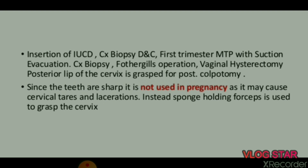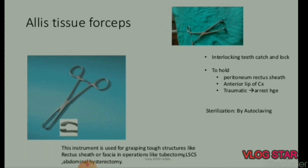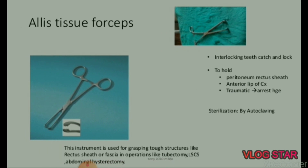Uses of Volsellum forceps: insertion of IUCD, cervix biopsy, D&C, first trimester MTP with suction evacuation, cervical biopsy, Fothergill's operation, vaginal hysterectomy. Posterior lip of the cervix is grasped for posterior colpotomy. Since the teeth are sharp, it is not used in pregnancy as it may cause cervical tears and lacerations. Instead, sponge holding forceps are used to grasp the cervix.